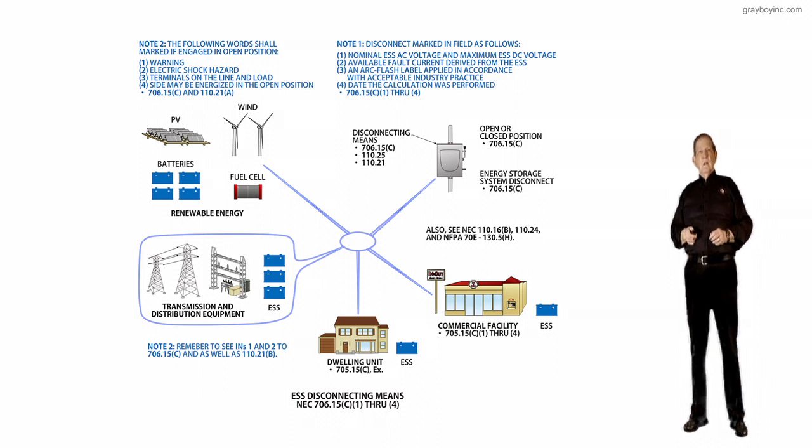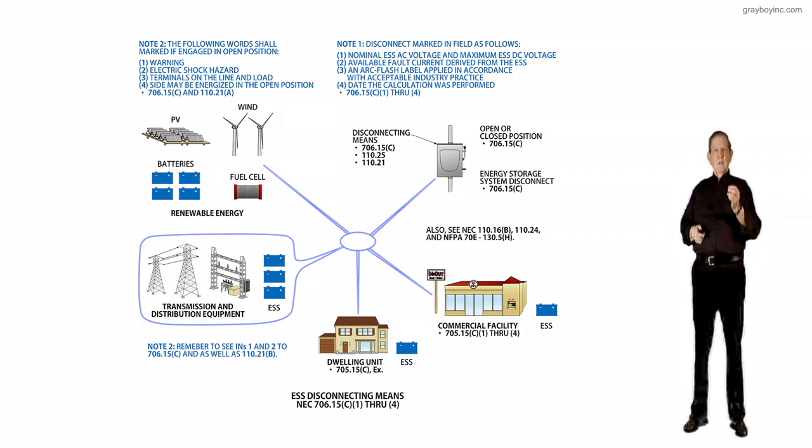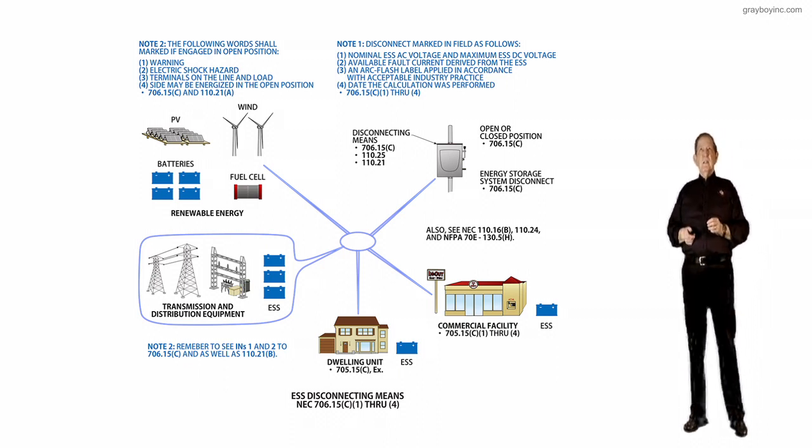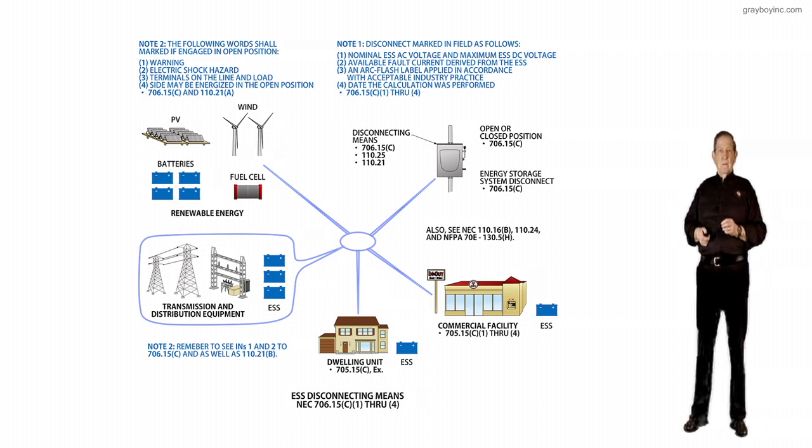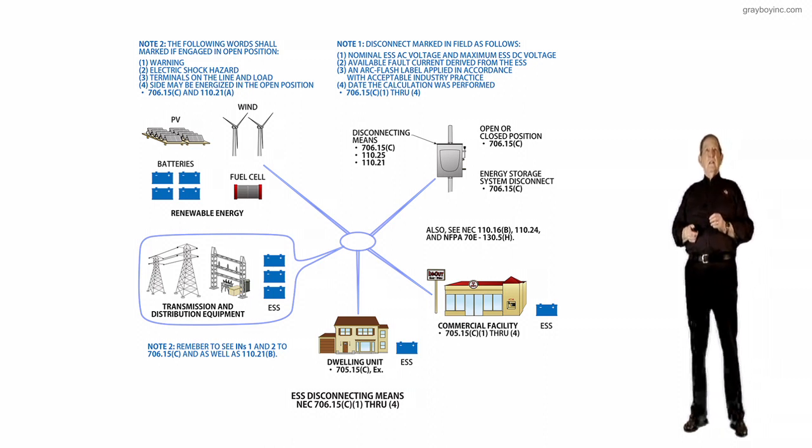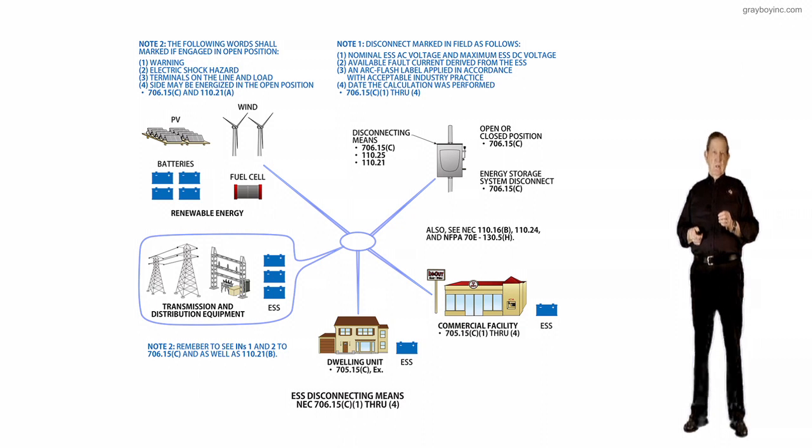Now, note two deals with dwelling units. And basically, it talks about the disconnect. It says the disconnect should be located outside of the unit in a readily accessible location.